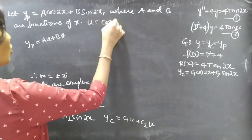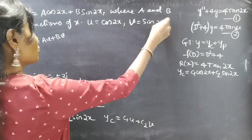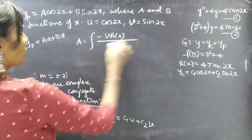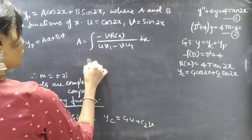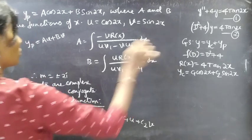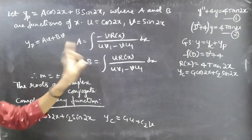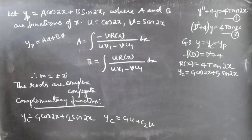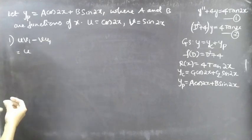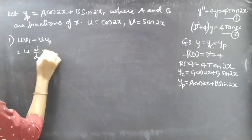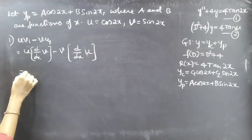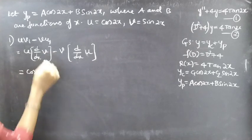So u = cos(2x) and v = sin(2x). We find a and b using the variation of parameters formulas: a = ∫[−v · R(x) / (uv' − vu')] dx and b = ∫[u · R(x) / (uv' − vu')] dx. Before finding a and b, we need to compute the Wronskian uv' − vu', since it appears in both formulas. Here v' is the derivative of v and u' is the derivative of u with respect to x.